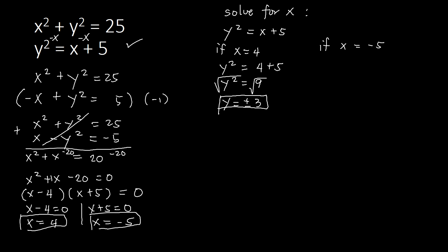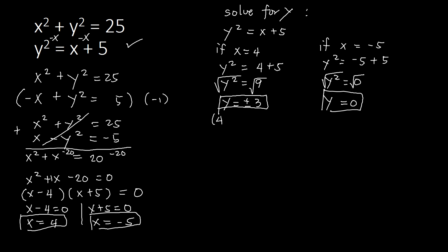When x is negative 5, we substitute into the second equation: y squared equal to negative 5 plus 5, which gives y squared equal to 0. Taking the square root, y equals 0. So our three solution points are (4, 3), (4, negative 3), and (negative 5, 0).